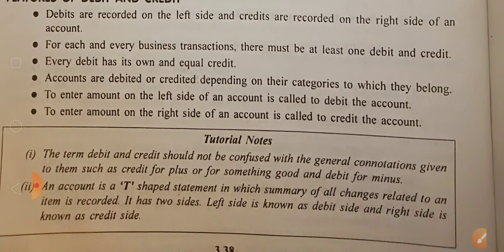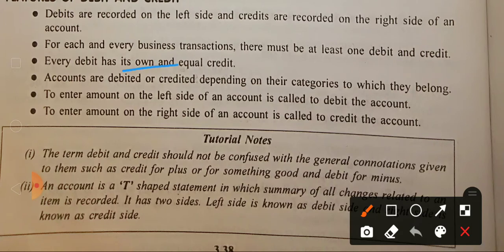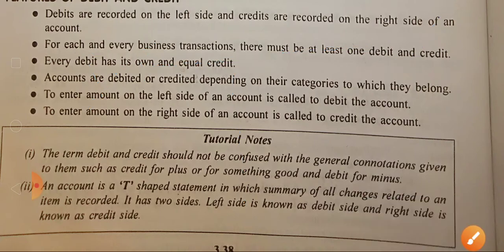The term debit and credit should not be confused with general meanings, such as credit for something good. If you look up debit or credit in a dictionary, you may get confused. Just remember: the debit is the left side and credit is the right side of a T-shaped account. When we prepare an account, it is T-shaped.